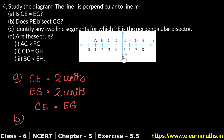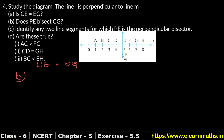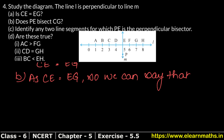Now let's do part b: Does PE bisect CG? PE is the line through point P on line m. CG is equal to 4 units total. PE divides it into two equal parts — we have seen CE equals EG, so CE equals EG. Therefore, we can say that PE bisects CG.